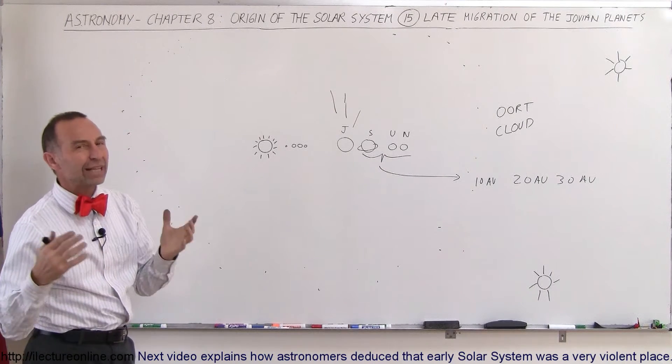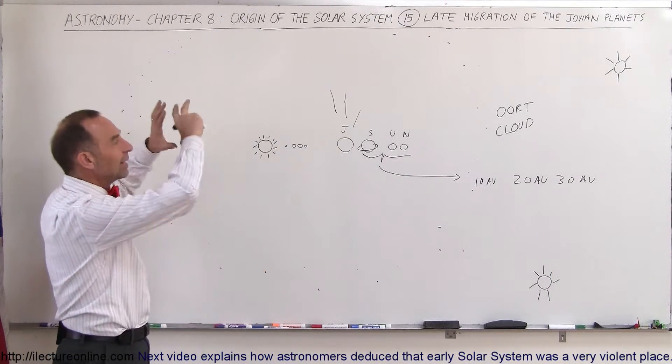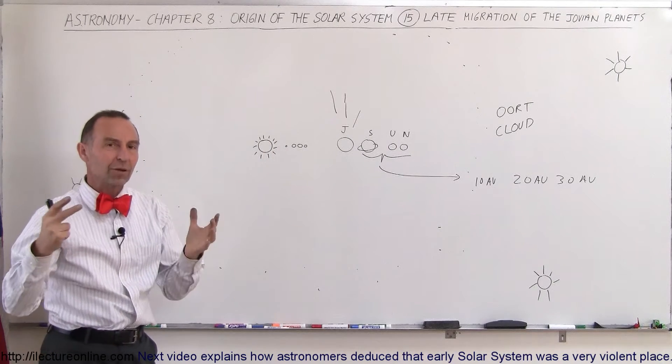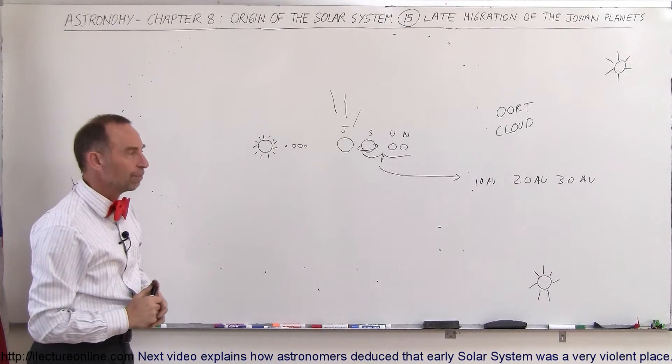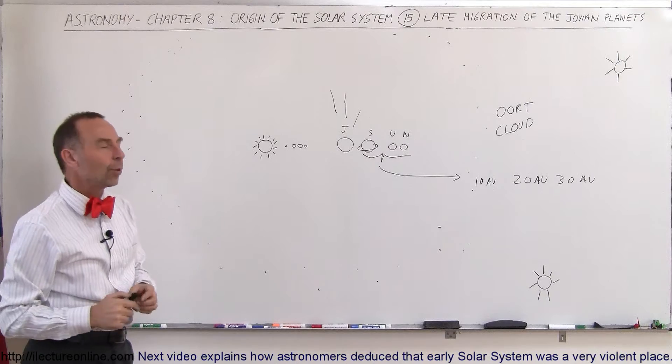Mostly ice particles, probably reside in a spherical shaped region around our solar system. How did that get to be the way it did?